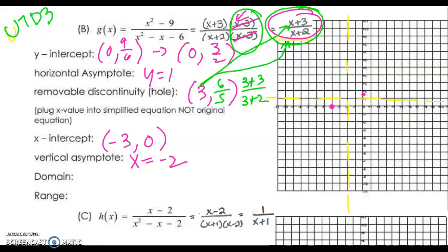So when you plot (3, 6/5), you go to 3 and then up 1 and a little bit. And that is actually a hole, so it's 1 hole because that's 5/5 plus an extra — just a little open circle there. And that's it, that's all we need to do.